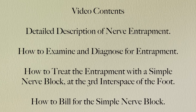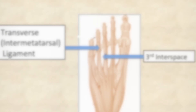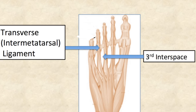Most important, I will demonstrate a simple nerve block that you can use in your office for the treatment of the injured or entrapped nerve of the third interspace of the foot. Finally, I will discuss how to bill for the nerve block so that you can get reimbursed for performing it. It may be hard to understand how one injured nerve in the foot could be a major cause of pain of the back, hip, thighs, and legs, but the common plantar nerve is the most distal branch of the sciatic nerve. Any injury to it can result in pain anywhere along the course of the sciatic nerve. The most frequent injury that occurs to the nerve is a nerve entrapment. That entrapment takes place under the third and fourth metatarsal heads at the transverse metatarsal ligament in the third interspace of the foot.